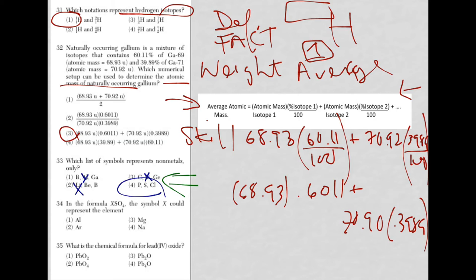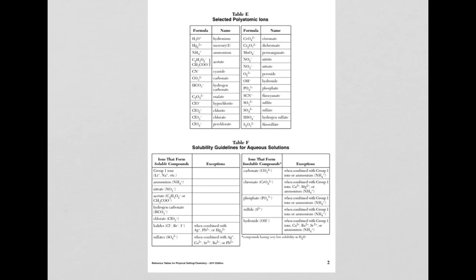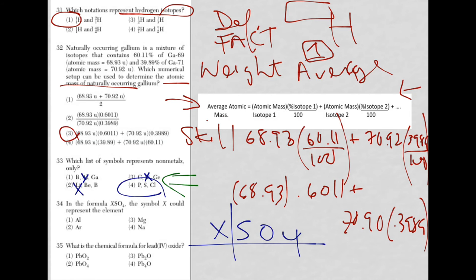Question 34 gives you a formula XSO4. Symbol X could represent which element? Sulfate is a polyatomic ion with a charge you can look up on reference table E. Sulfate has a charge of minus two. If I have sulfate with a minus two charge, whatever is bonded with it has to be plus two, because compounds must equal zero.